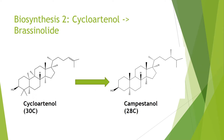Starting from cycloartenol, a 30-carbon molecule, we then move to campestinol. The main modifications here include a loss of two carbons. These include losses in the multi-ring structure, but also gains in methyl groups in the aliphatic region in the top right of the molecule.